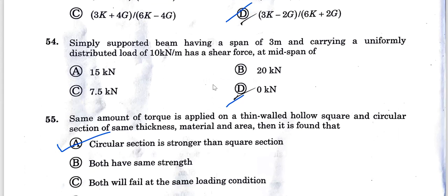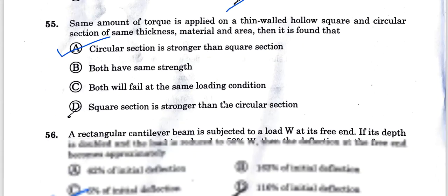Question 54: Simply supported beam having a span of 3 meters carrying a uniformly distributed load of 10 kilonewtons per meter has a shear force at mid-span. Generally, a simply supported beam at mid-span has shear force equal to 0 and bending moment at maximum. Option D, 0 kilonewtons, is the correct answer.